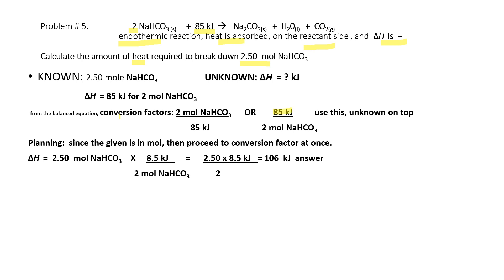The conversion factor is 85 kilojoules over 2 moles of sodium bicarbonate, because the unknown is kilojoules. Since the given is already in moles, proceed directly to the conversion factor. Delta H equals 2.5 moles of sodium bicarbonate times 85 kilojoules over 2 moles of sodium bicarbonate. Cancel moles of sodium bicarbonate: 2.5 times 85 kilojoules divided by 2 gives 106 kilojoules.